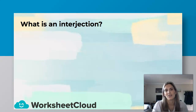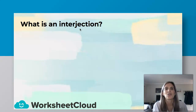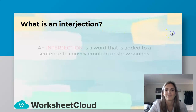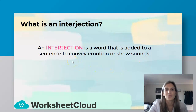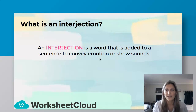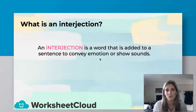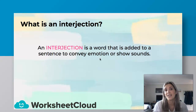What is an interjection? If I look at the word interjection, it almost feels like someone's going to abruptly interrupt me. An interjection is a word that is added to a sentence to convey emotion or show sounds. Sometimes it's difficult to show our emotion through words. If I just say "I'm angry," it doesn't really portray my emotion. But if I say "Oh, I'm so angry" — that word before is the interjection. I can hear some of you laughing, and that's fine, as long as you laugh with me and not at me.